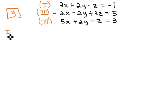We said we could do that with equations 1 and equations 2. Equation 1 was 3x plus 2y minus z equals negative 1, and equation 2 was negative 2x minus 2y plus 3z equals 5.